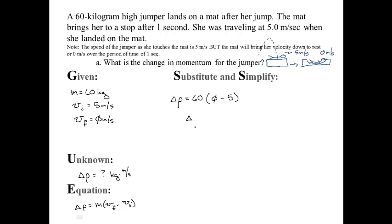Change in momentum equals negative 300 kilograms times meters per second. And so this negative sign just means it's going from a high momentum to a low momentum. And in this case the low momentum is 0.